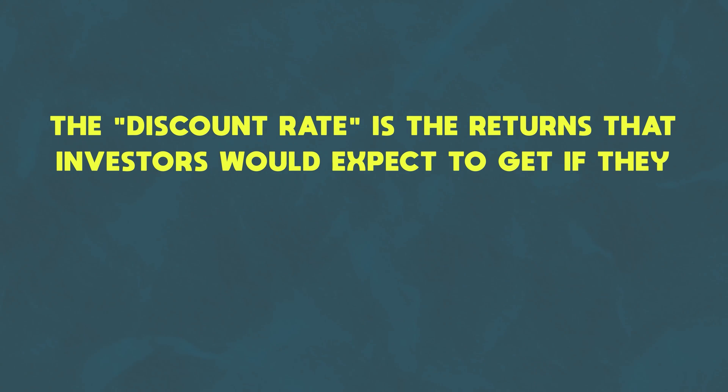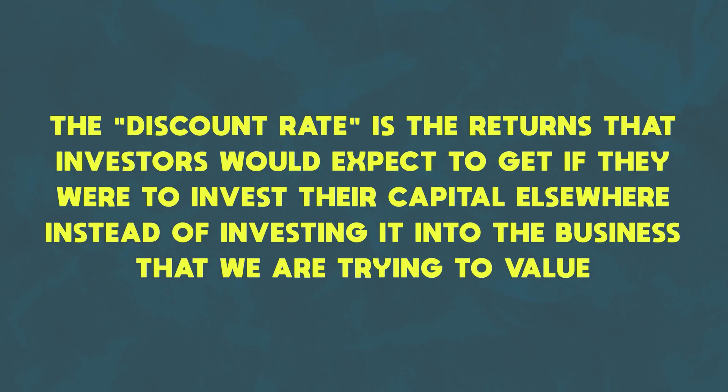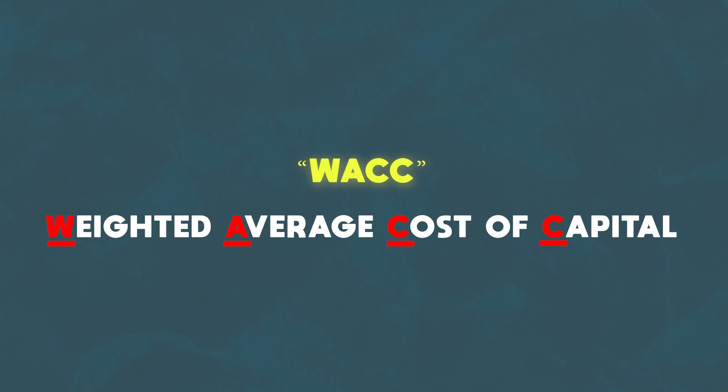That basically explains what the discount rate represents. It's the return your investors would expect to get if they were to invest their capital elsewhere instead of investing it in the business we're trying to value — in other words, it's the opportunity cost they're forgoing. That's why we use it as the discount rate to discount our future cash flows back to their present values. This discount rate — the 10% in our example — is calculated using what we call WACC, which stands for weighted average cost of capital. There's a lot that goes into calculating WACC, but now you have a high-level understanding of how a discounted cash flow works.